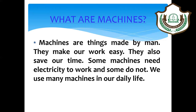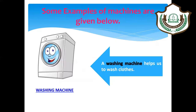Let us look at some examples of machines. First is the washing machine. A washing machine helps us to wash clothes.